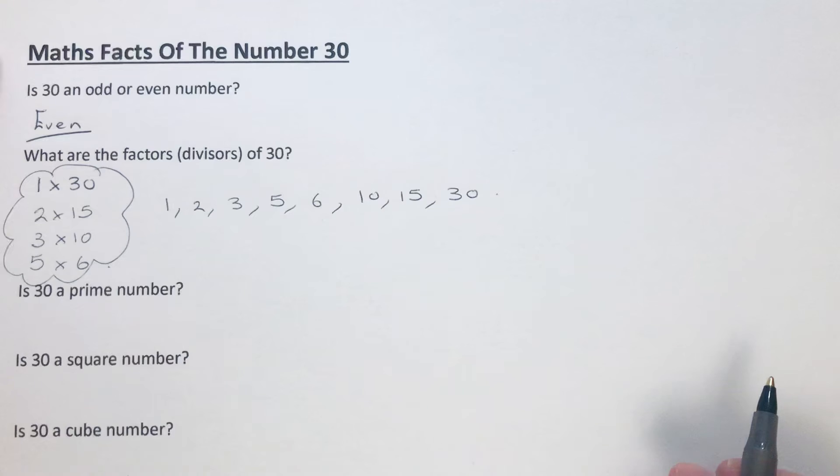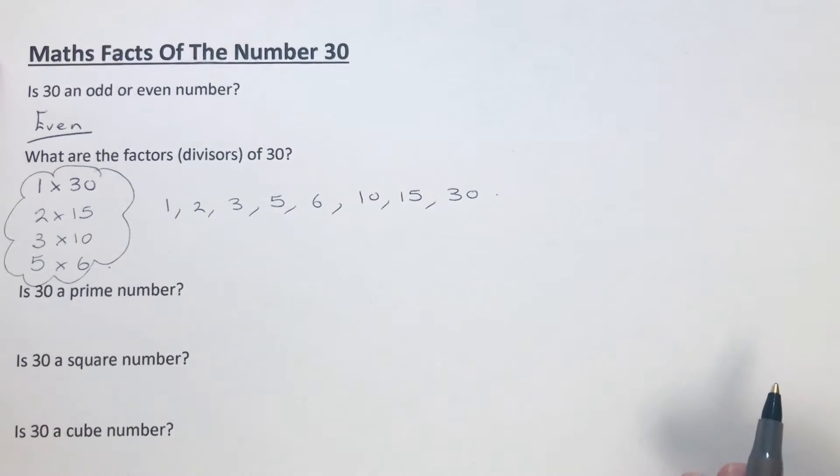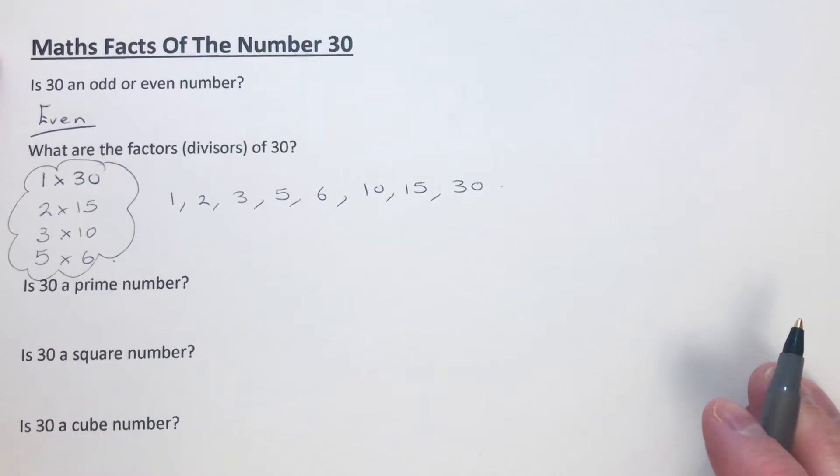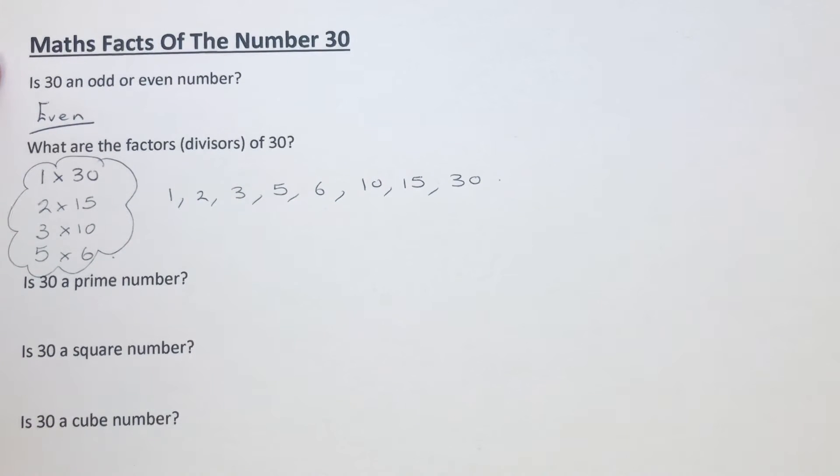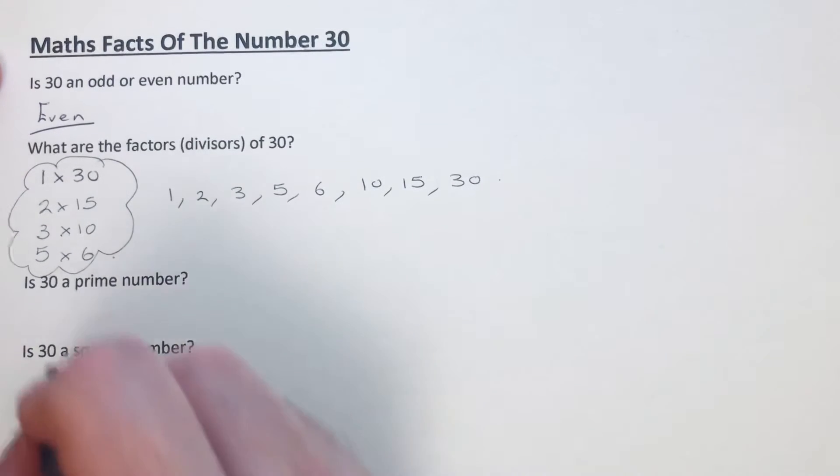So is 30 a prime number? Well, a prime number has exactly two factors: one and itself. This one has a lot more than two factors - we've got eight here. So 30 is not a prime number.